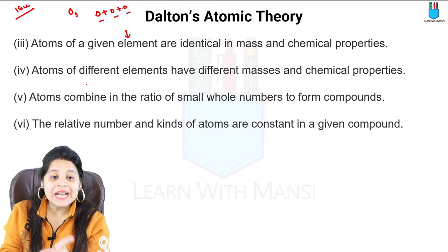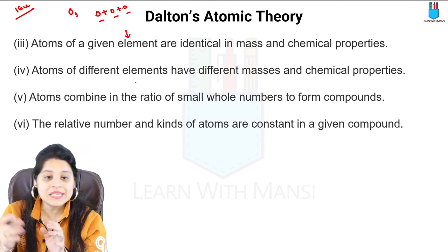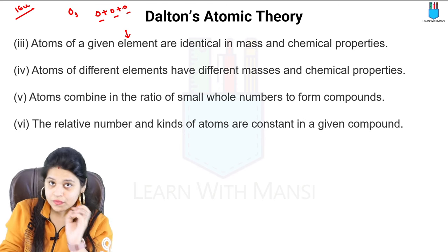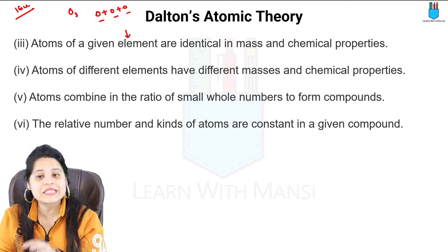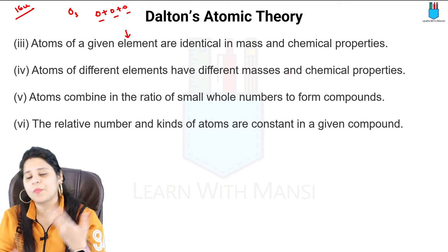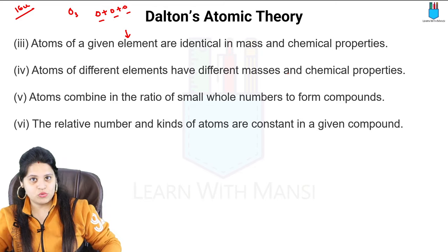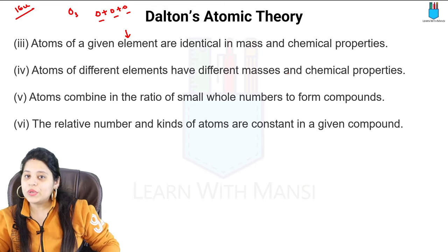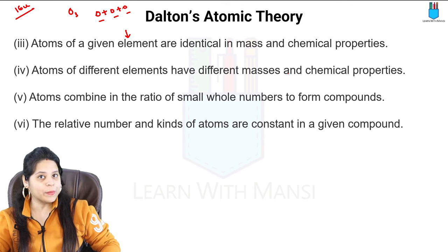Fourth point: atoms of different elements have different masses and chemical properties. Of course, if we talk about different atoms, they are different. Their atomic mass is different, so their mass is different, and their chemical properties are also different.